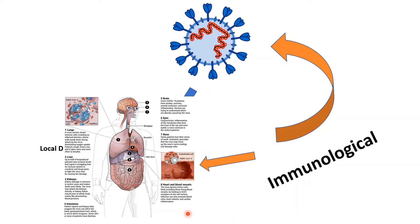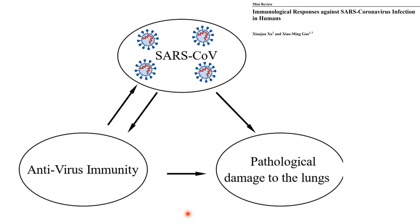Meanwhile, the cells of the immune system can also be directly infected by SARS-CoV-2. So once again, we have two responses: the direct pathological damage to the lung, followed by the antiviral immunity.